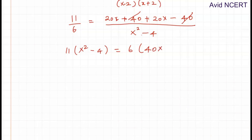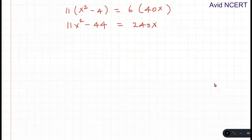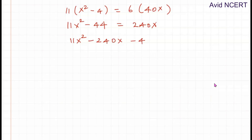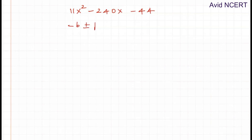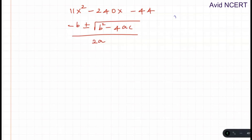So we have: 11 times (x squared minus 4) equals 6 times 40x, which gives 11x squared minus 44 equals 240x. Rearranging: 11x squared minus 240x minus 44 equals 0. Finding factors for this is not straightforward, so we use the quadratic formula: x equals minus b plus or minus the square root of (b squared minus 4ac), all divided by 2a.